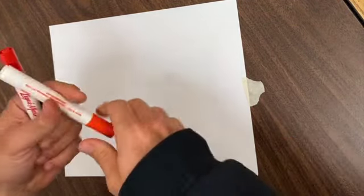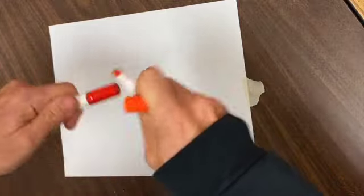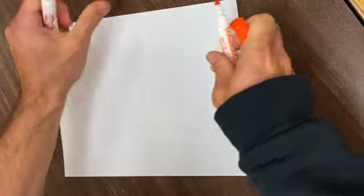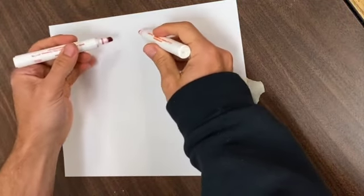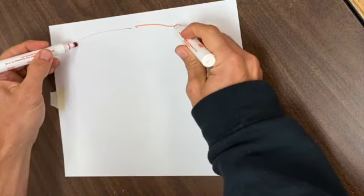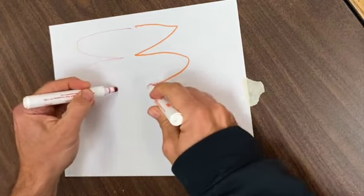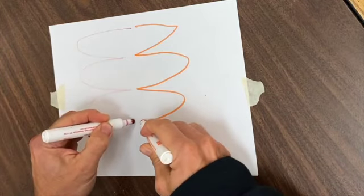I'll choose two colored markers. They could be the same colors or they could be different. Both hands will be holding a marker and I'm going to start drawing, trying to make the two colors mirror each other.